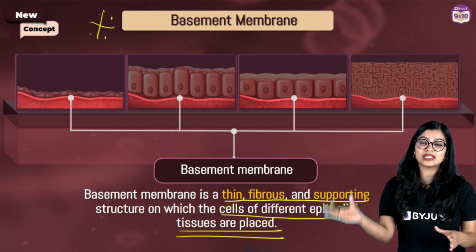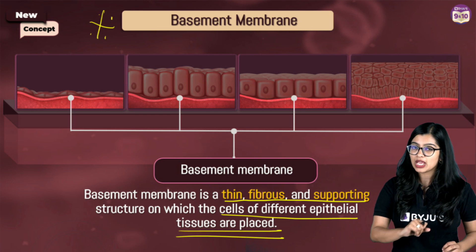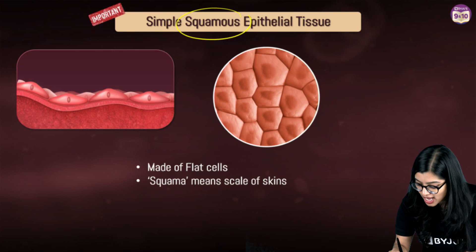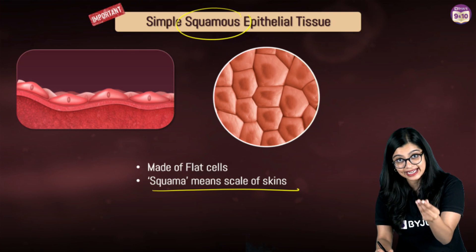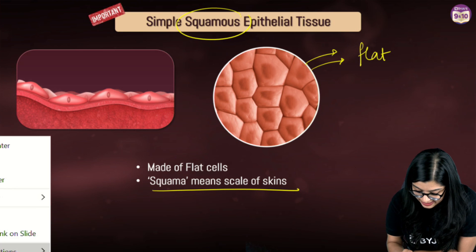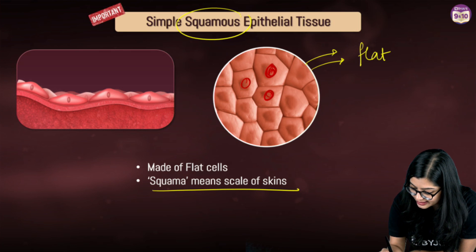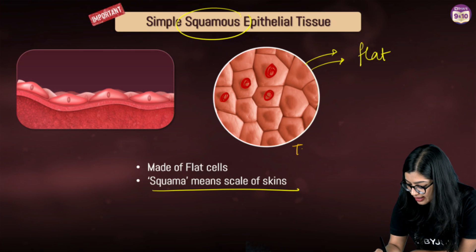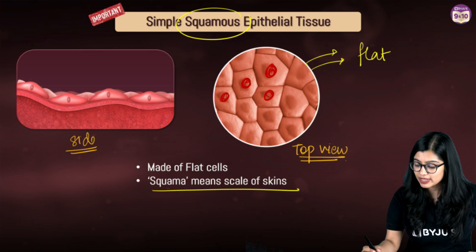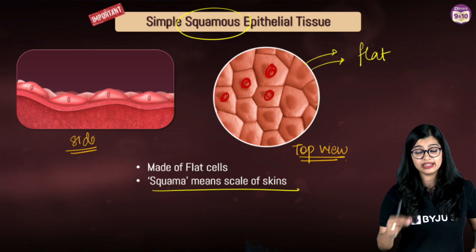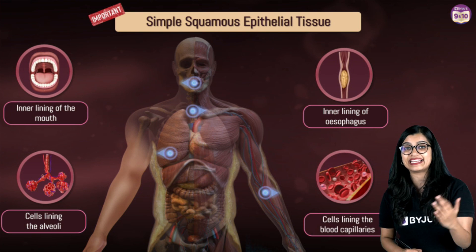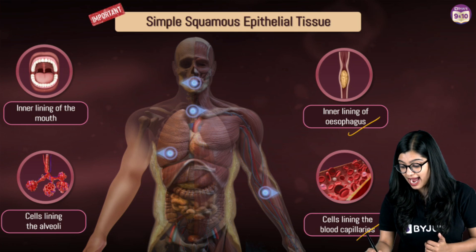The first type is simple squamous epithelium. The word 'squama' means scale of skin — these cells are extremely thin, flat, and have a prominent nucleus. Viewed from the top they appear scale-like; from the side they are flat cells. They are found in the inner linings of the mouth, alveoli, esophagus, and blood capillaries.